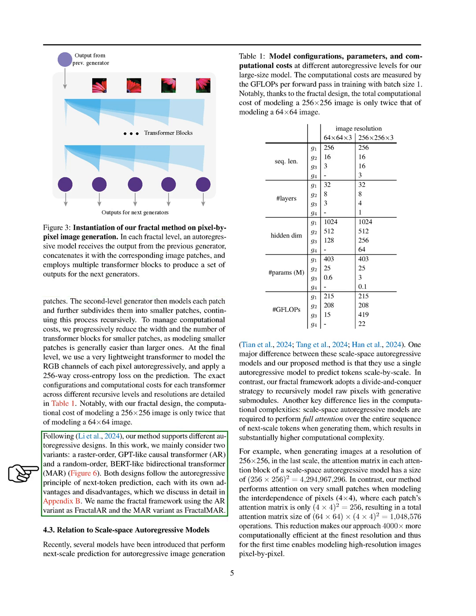Notably, our fractal design allows us to model a 256-by-256 image at only twice the cost of a 64-by-64 image. We also explore different autoregressive designs, focusing on two variants: a raster-order GPT-like causal transformer and a random-order BERT-like bidirectional transformer. Both follow the autoregressive principle of next-token prediction, each with unique advantages and disadvantages. We refer to the fractal framework using the AR variant as fractal AR and the MAR variant as fractal MAR.